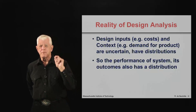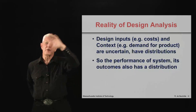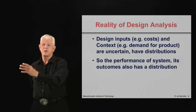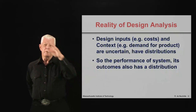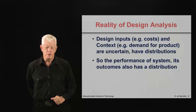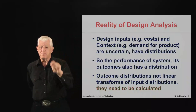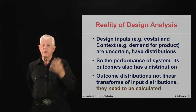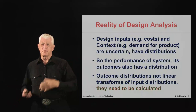So the performance of a system, when we calculate it, has to be some kind of distribution — some kind of range of possibility from the lowest to the best, with different probabilities at different points along the distribution. It's important to realize that the outcomes of a system are not the same as the inputs to the system.